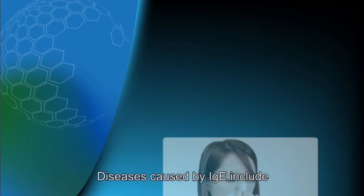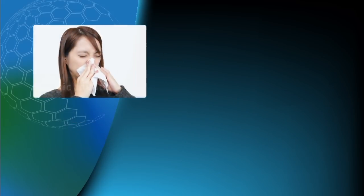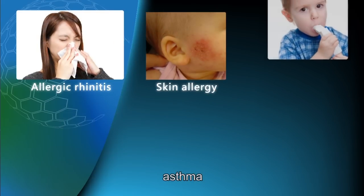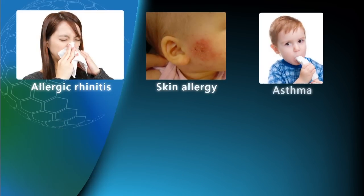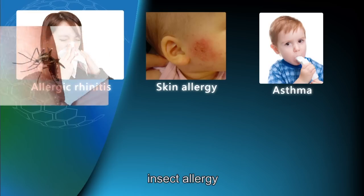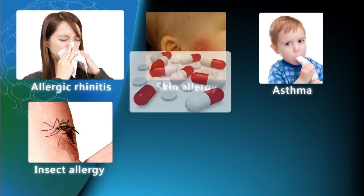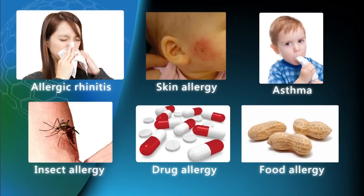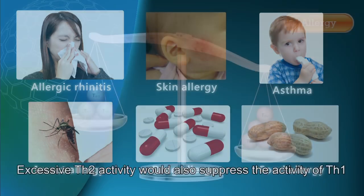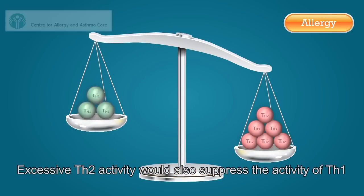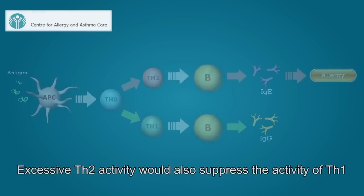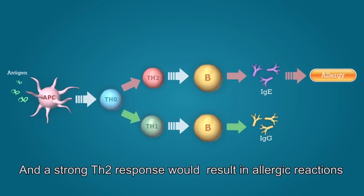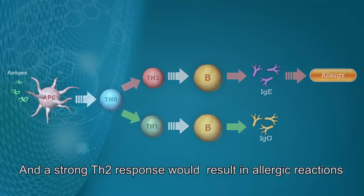Diseases caused by IgE include allergic rhinitis, skin allergy, asthma, insect allergy, some drug allergies, and some food allergies. Excessive Th2 activity would also suppress the activity of Th1, and a strong Th2 response would result in allergic reactions.